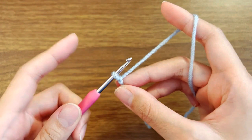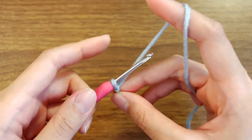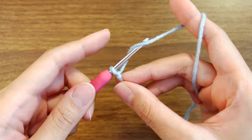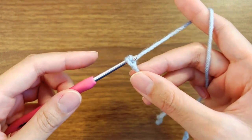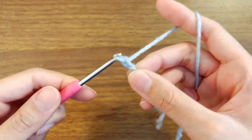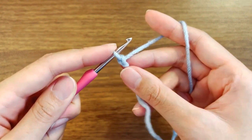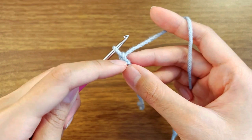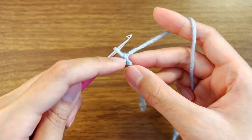In order to chain, you're going to put the hook over the yarn. I also call this yarn over hook, and slowly pull that yarn through the loop that you made. Now you have your first chain.